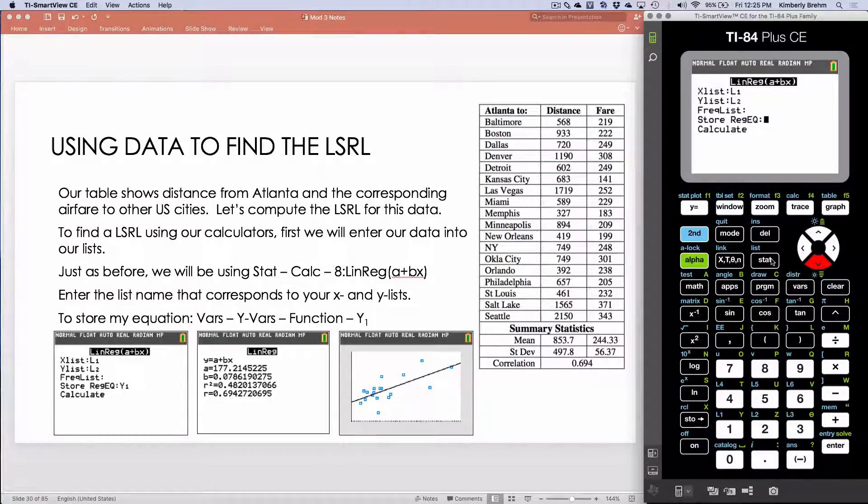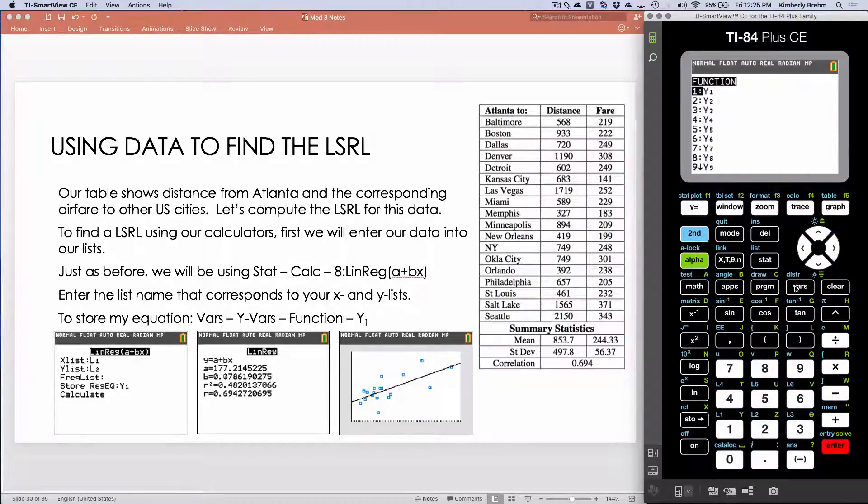And then Store Regression Equation. This time I am going to do that because by doing that, essentially it creates this line for me on my scatterplot. So to do that, I arrow down, then I go to VARS, arrow to Y VARS, function Y1. So what that tells the calculator to do is to take the equation that it's going to come up with for me and put it into my Y equals box. And then I will just calculate.